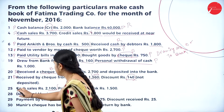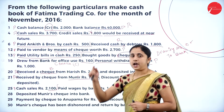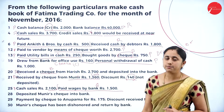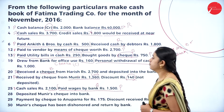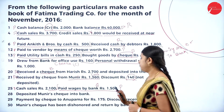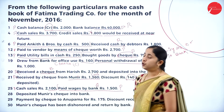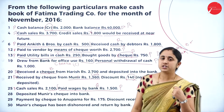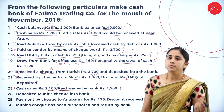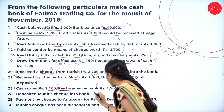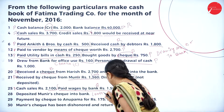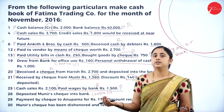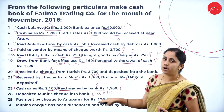Next, cash sales 2100 — receipt side, to sales account, amount in cash column, 2100. Paid wages by bank rupees 1500 — payment side, by wages account, amount in bank column, 1500. Next, depositing Munir's cheque into bank on November 28th. This is a transaction between cash and bank, making it a contra entry — recorded once in receipt side (to cash account, bank column) and once in payment side (by bank account, cash column), 1360 each.